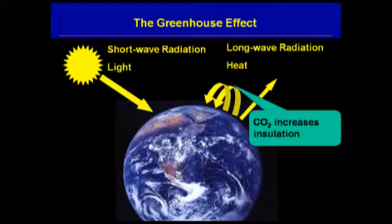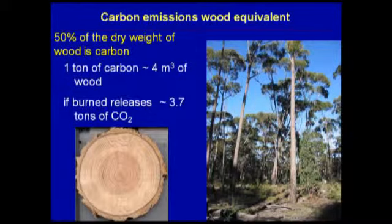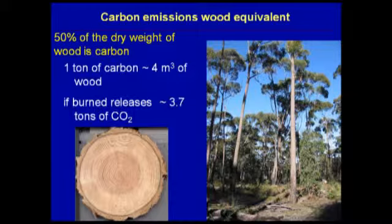One of the major greenhouse gases is carbon dioxide. Trees exchange carbon with the atmosphere and store it in wood, and 50% of the dry weight of wood is carbon — in fact 50% of the dry weight of anything organic is carbon, whether it be yourself or anything in your garden. One ton of carbon can be absorbed in about four cubic meters of wood, and if we burn that wood we release about 3.7 tons of CO2 because the carbon has to combine with oxygen in the burning process.